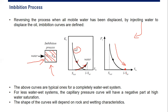The above curves are typical for a completely water-wet system. For less water-wet systems, the capillary pressure curve will have a negative part at high water saturation. The shape of the curves depends on the rock and wetting characteristics.